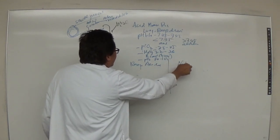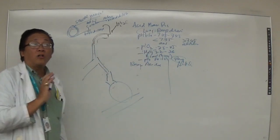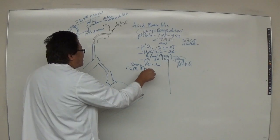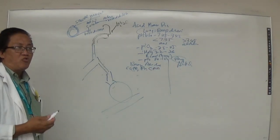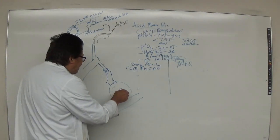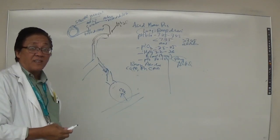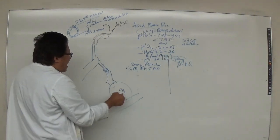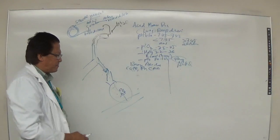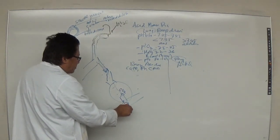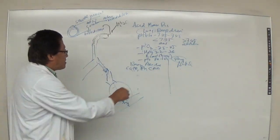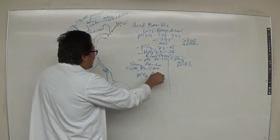In respiratory disorders, the lung is always the organ involved. You can have respiratory acidosis or alkalosis. In COPD, bronchitis, emphysema, asthma, and pneumonia, there is a lot of mucus. If mucus obstructs the airway, CO2 cannot be exhaled. The CO2 goes back into the blood. What happens to the pCO2 level in respiratory acidosis? It rises — greater than 45.